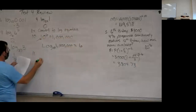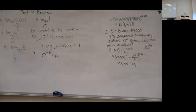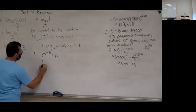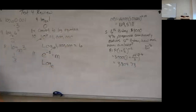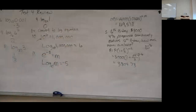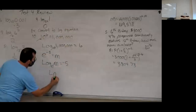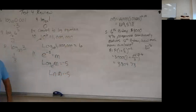Problem 11 is the same thing: e to the negative 5 equals m. Write log base e of m equals negative 5. Since this is log base e, we switch that to: ln(m) equals negative 5. Remember, log base e is the same as ln.